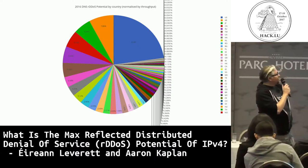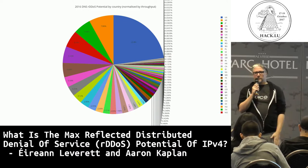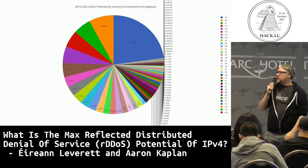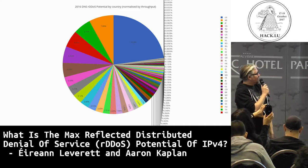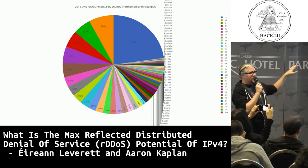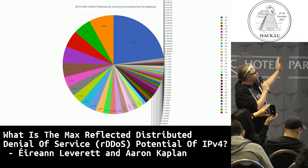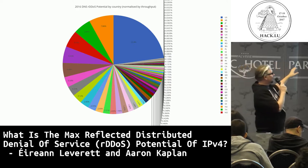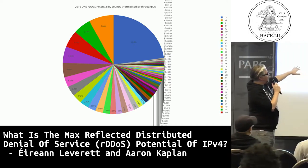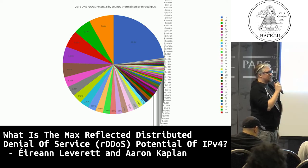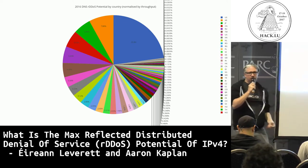We're going to bombard you with pie charts for a while. What I want you to take away from this graph is that 50% of DDoS potential is made up by a small number of countries. This is DNS for 2016. There are all these small players at the bottom with a small percentage of the total potential, but then there are countries that make up nearly 50% that we should be having discussions about.